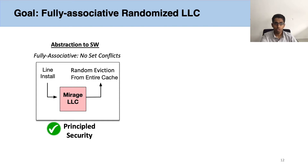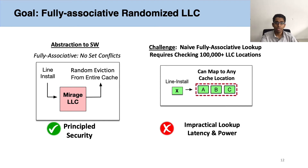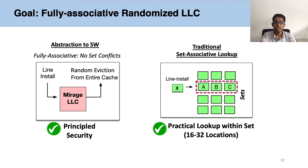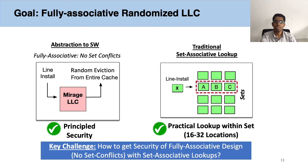For principled security, our goal is to provide the abstraction of a fully associative randomized LLC. What this means is when a new line is installed into the LLC, it can evict any random line from the entire cache, thus eliminating set conflicts. But designing such a cache is challenging. A naive approach would allow an address to map to any location in the LLC in a fully associative manner, but this is impractical as a cache lookup would require searching through hundreds of thousands of addresses, which can be extremely slow — even slower than a DRAM access. Ideally, we prefer a traditional set-associative design where lookups require searching through only 16 to 32 locations within a single set. The key challenge is how do we get the security of a fully associative design with practical set-associative lookups?